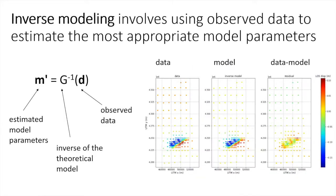The other approach is inverse modeling, where you start with data. The data shown here is downsampled InSAR data that has been unwrapped and converted into a series of point measurements. You feed that data into your modeling code and get as output a series of estimated model parameters. This is the mode we take when we want to find out what kind of earthquake we had — for example, this earthquake from Turkey from earlier in the year. The model is produced by an algorithm that tries to find the best set of model parameters to fit the data.